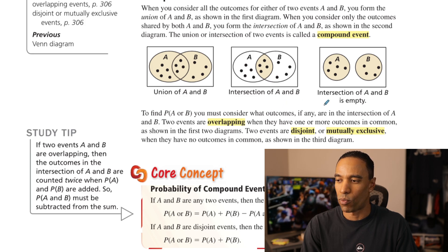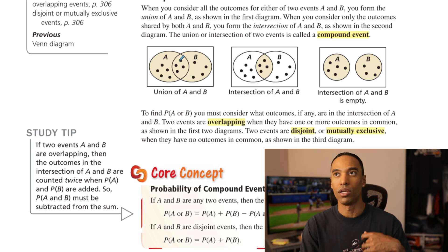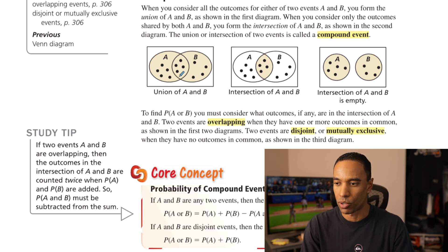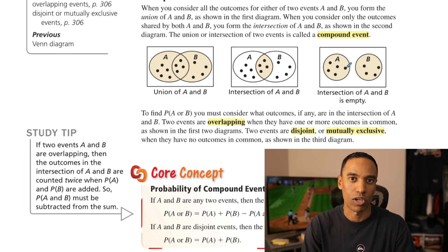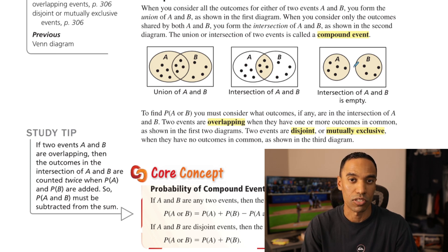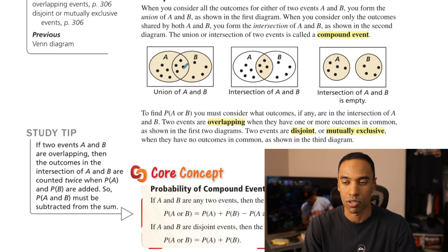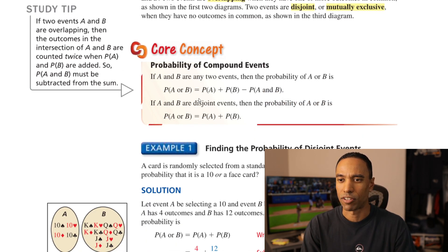To find a probability of A or B, you must consider what outcomes, if any, are in the intersection of A and B. Even with an 'or' case, the in-between is still important and is part of our formula. Two events are overlapping when they have one or more outcomes in common. Two events are disjoint or mutually exclusive when they have no outcomes in common. For example, flipping a coin — you can never land on both heads and tails at the same time. Whereas when you draw a card, you can land on a heart and a face card at the same time, since there's overlap between all the hearts and all the face cards.